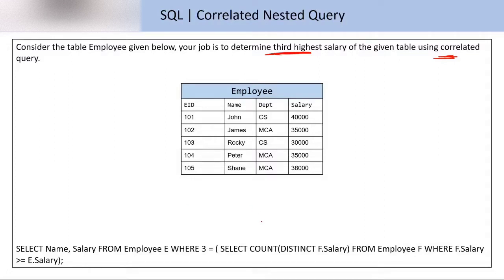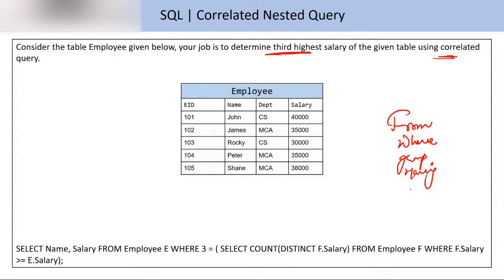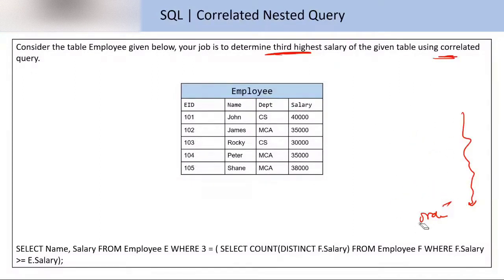As I told you while solving nested query, you follow the pattern of execution. What is the pattern of execution? First we check FROM, then we go for WHERE, then GROUP BY, then if there is HAVING we use HAVING, then if we have an aggregate function we check that, then SELECT, and then ORDER BY. This is the pattern of execution for any query.